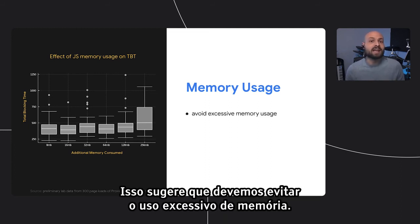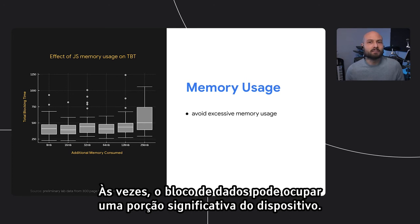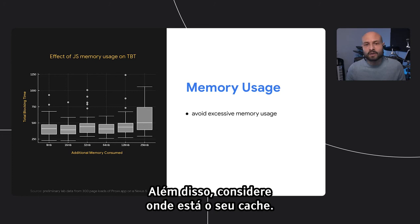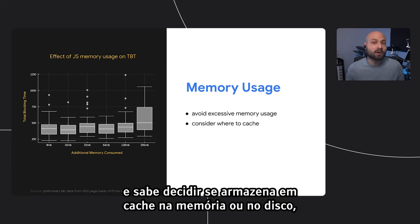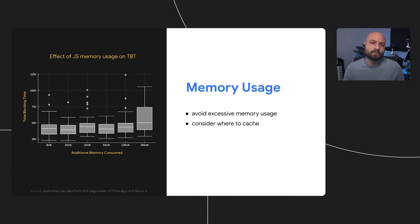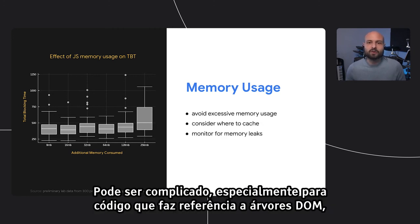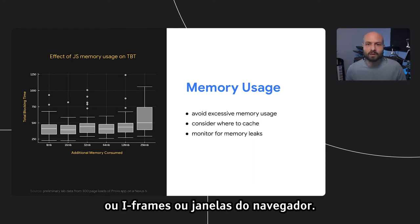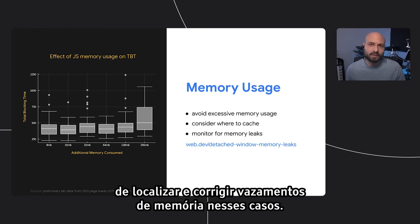This suggests we should avoid excessive memory usage. We often view memory as an inexhaustible resource, but it's not — on some devices, that big chunk of data might be a significant percentage of the device's available memory. Also consider where you're caching: we can rely on the network cache, which is smart about deciding between caching in memory or on disk depending on usage heuristics. Finally, monitor for memory leaks — this can get fairly tricky, especially for code that's referencing DOM trees, iframes, or browser windows. There's an article that includes five different ways to find and fix memory leaks in those tricky cases.